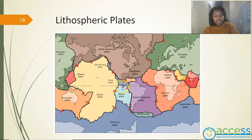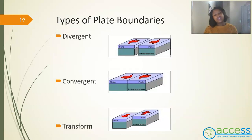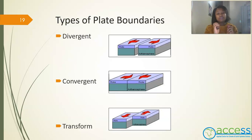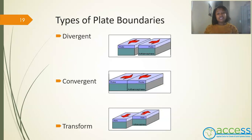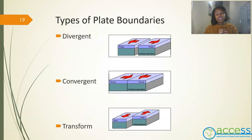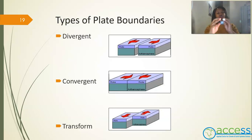The red arrows indicate how these plates are moving relative to each other. Around each lithospheric plate we have plate boundaries, which are breaks between plates. There are three types of plate boundaries. The first is the divergent plate boundary — 'di' means apart, so the plates are moving apart from each other. The second is the convergent plate boundary, where plates are moving towards each other. The last is the transform plate boundary, where the plates are sliding or grinding past one another.